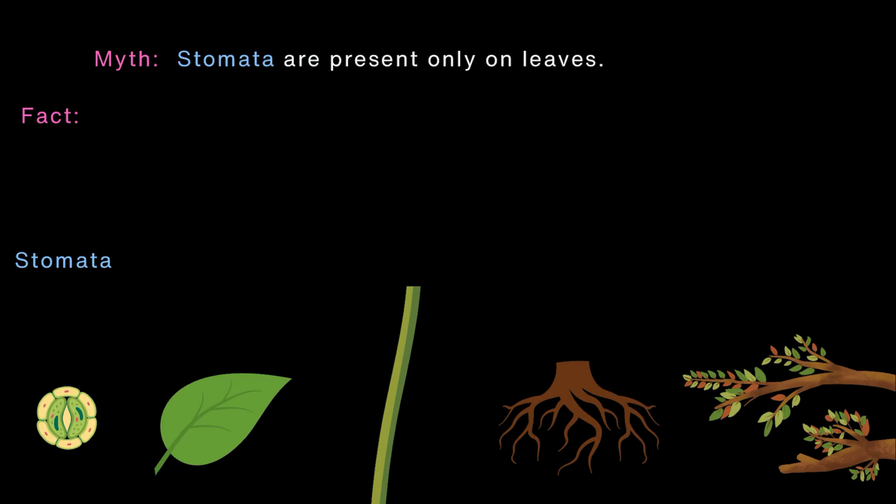Now, here is another common myth that stomata are only present on leaves. While yes, most of the stomata are present on the leaves, young green branches of the tree that can perform photosynthesis also have stomata.